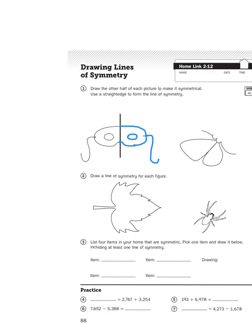So if you take a look at problem number two, we have a couple of images: a leaf and a spider. Now the job here is to draw a line of symmetry for each figure to divide the shape into two equal mirror images of each other.